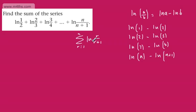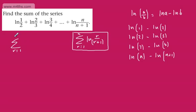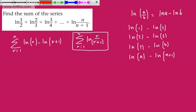So essentially what we're doing here is summing the series from R equals 1 to N of the natural log of R over R plus 1. That's what we're looking for. We can express this now in exactly the same way — as the sum from R equals 1 to N of the natural log of R minus the natural log of R plus 1. So let's build up a little table and fill those out.